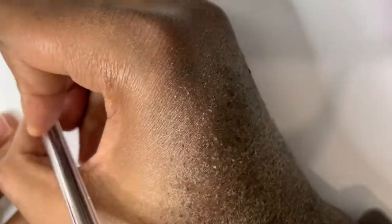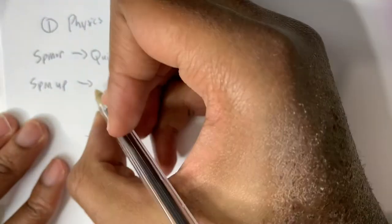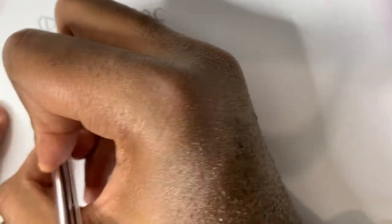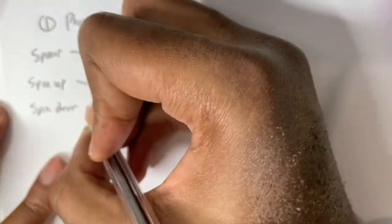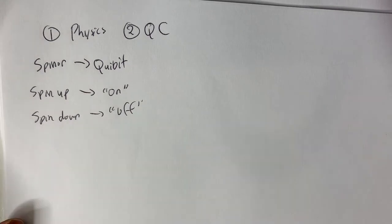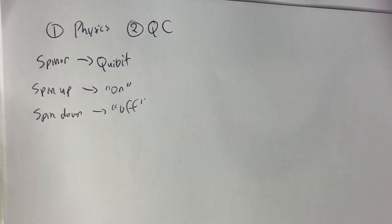When I say spin up, that's analogous to 'on', and spin down is analogous to 'off'. So in this video I'm going to give the physics perspective on the Bloch sphere, but the concept directly transfers to quantum computing. If I say spinor, that's just qubit for you quantum computing folks. Spin up is on, spin down is off.